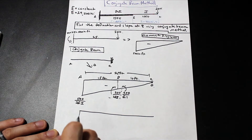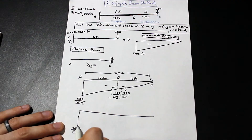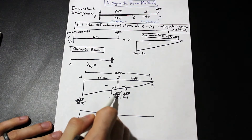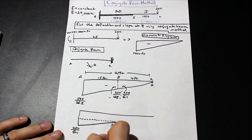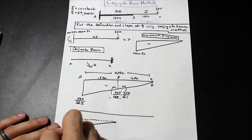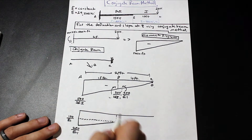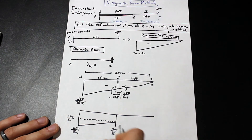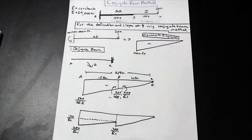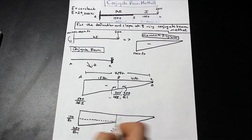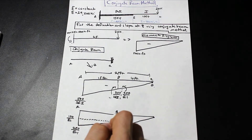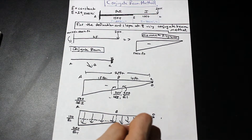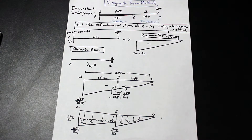Redrawing the M/EI diagram: at the fixed end we have 500/2EI = 250/EI. Going over to B on the left we have 200/2EI = 100/EI, and just to the right of B we jump to 200/EI, then go back to zero at the free end. Because the moment diagram is negative, the loading acts downward on the conjugate beam — that's important because it determines the direction of slope and deflection.